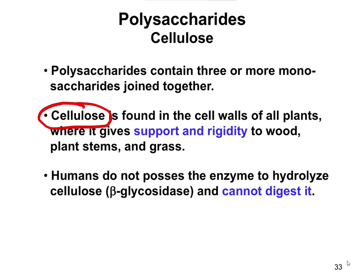Cellulose gives it that particular firm structure. Humans aren't able to digest cellulose. Whereas something like a termite can make a living eating wood, digesting it, and getting energy from it, humans don't have the enzyme that's able to break down cellulose. That specific enzyme is called beta-glycosidase.